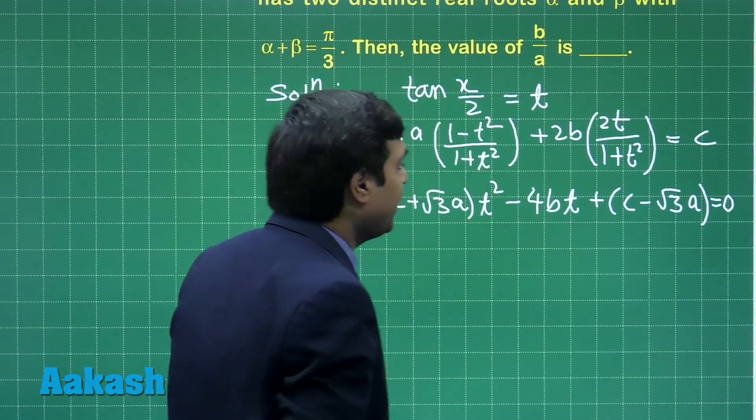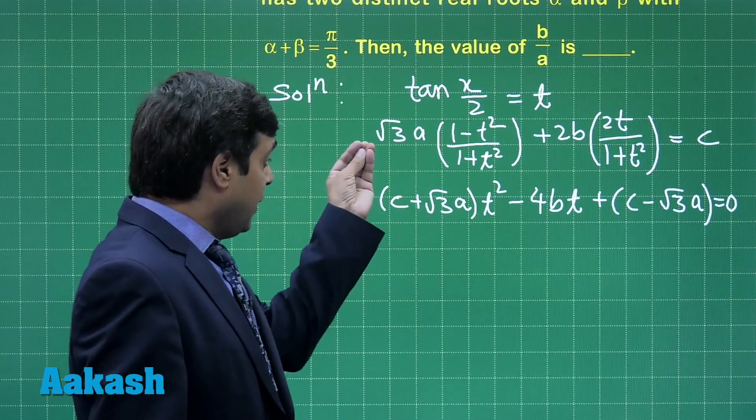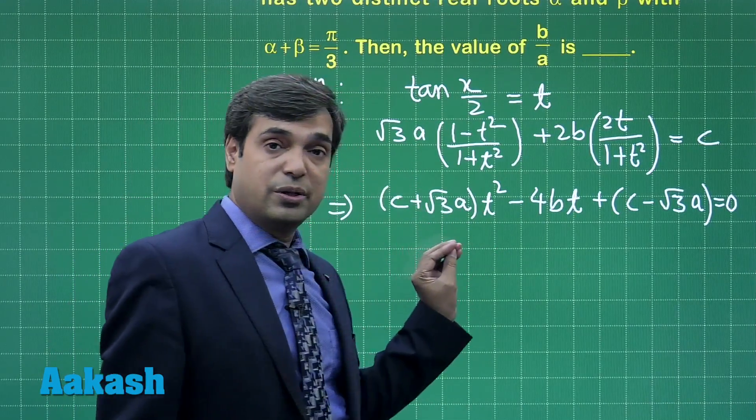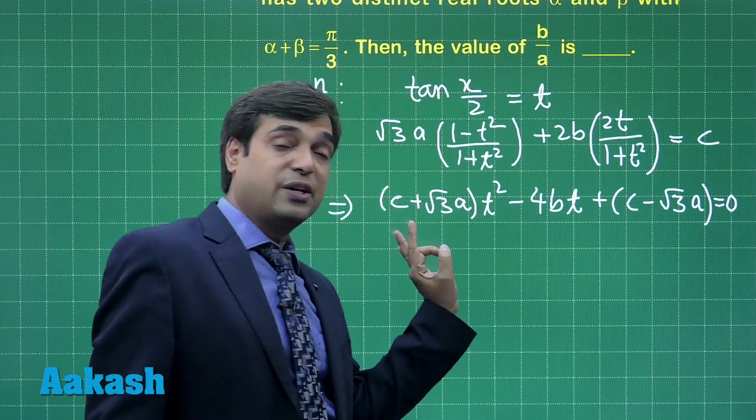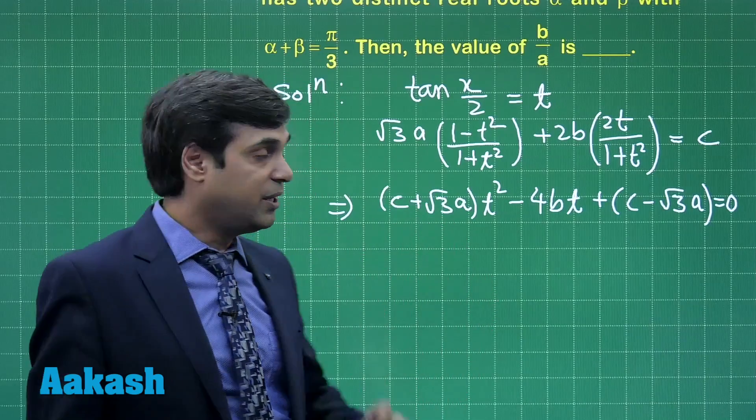So we get this as the quadratic equation in t. It has two real roots α and β. Clearly we can say the roots for this equation are tan(α/2) and tan(β/2).